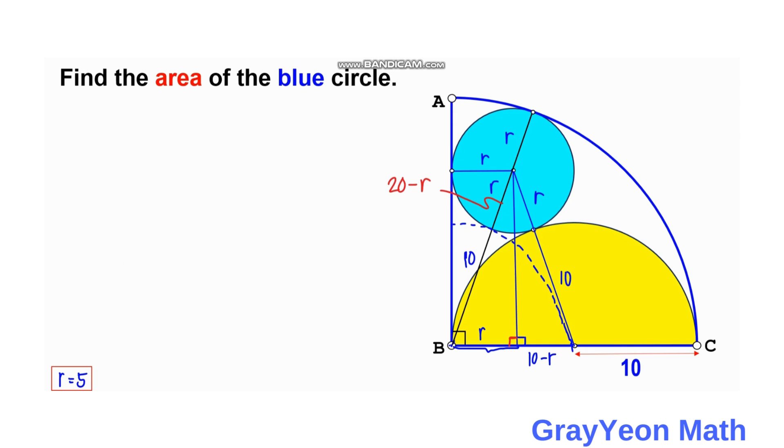So now for the final step, since we already have the value of r to be 5, so area is simply equal to pi r squared. So area is equal to pi times 5 squared, so it gives us a 25 pi square units. And that is our answer.